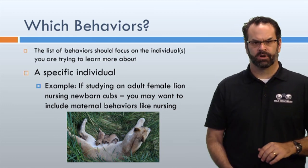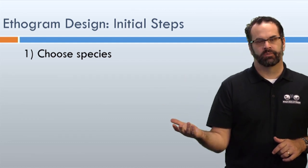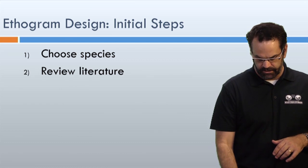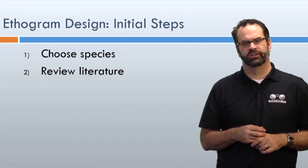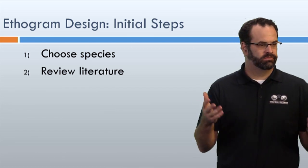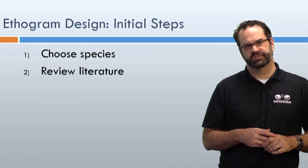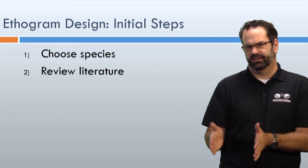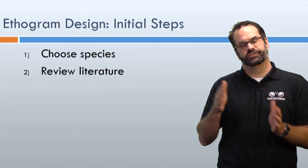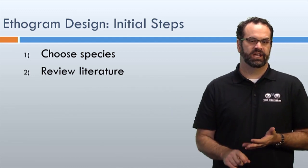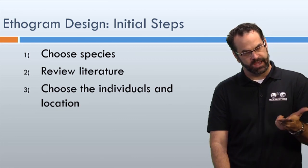Here are 10 easy steps to designing your ethogram. First, choose your species. Second, review the literature — we'll cover that next week — to see what's already been studied. If I find tons of papers on lioness nurturing behavior, is there a new aspect or a different subspecies to look at? You want to see what's known and done, then try to do something new. Third, choose your individuals, location, and the timing of your study.